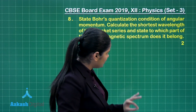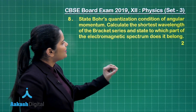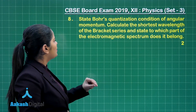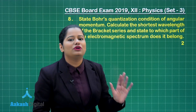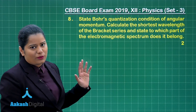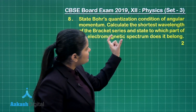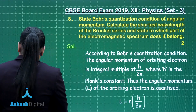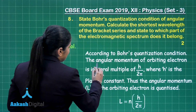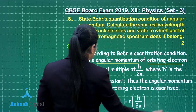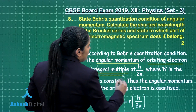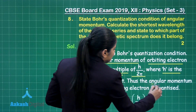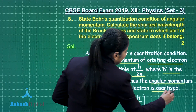State Bohr's quantization condition of angular momentum. According to Bohr's quantization condition, the angular momentum of the orbiting electron is an integral multiple of h by 2 pi, where h is Planck's constant. Thus, the angular momentum of the orbiting electron is quantized.